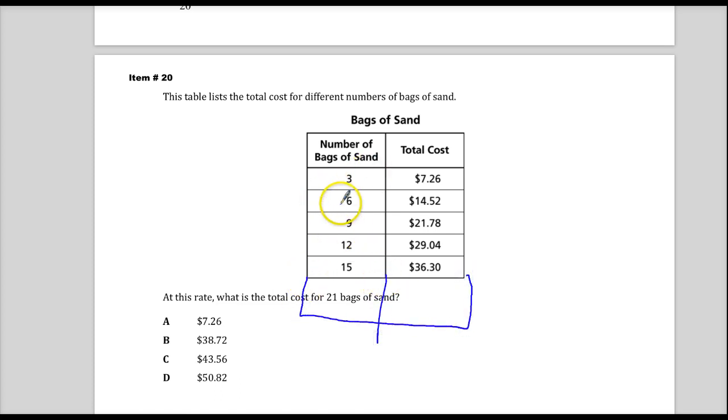So, because 3 plus 3 is 6, plus 3 more is 9, plus 3 more is 12, plus 3 more is 15. Now, if you extended it, plus 3 more would give you 18, and then plus 3 more from there would give you 21.